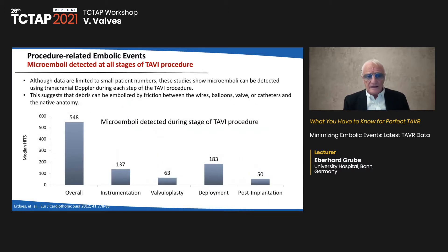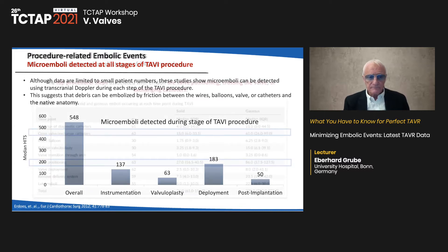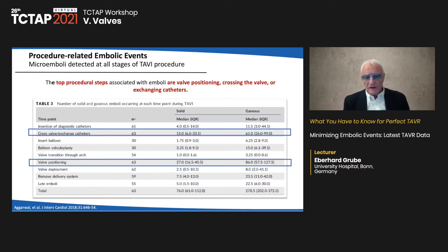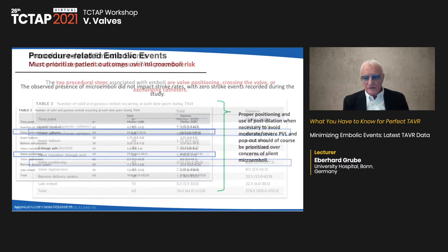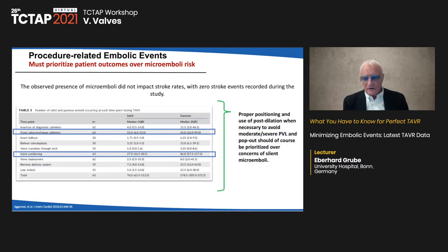Microemboli can be detected at all stages of the TAVI procedure — during instrumentation, valvular deployment, and post-implantation. The top procedural steps generating emboli are valve positioning, crossing the valve, and exchanging catheters. We must prioritize patient outcomes over microembolic risk; proper positioning and use of post-dilatation have to be prioritized over silent microemboli.